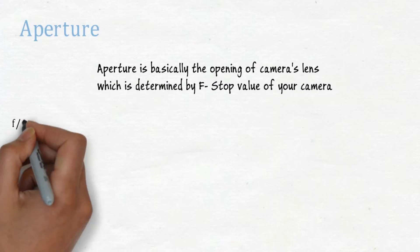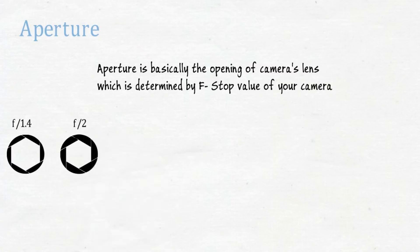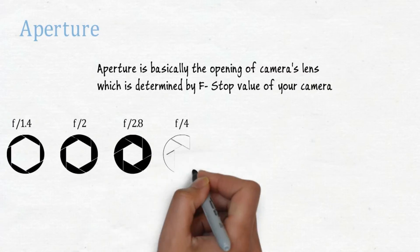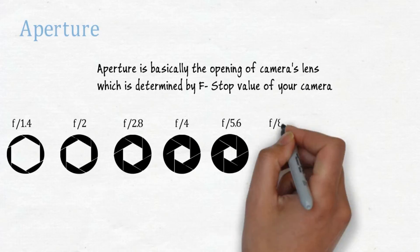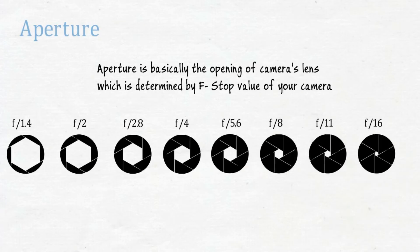The following diagram shows the different f-stop values on your camera. When it comes to aperture, the smaller number has the bigger aperture, and the bigger number has the smaller aperture.